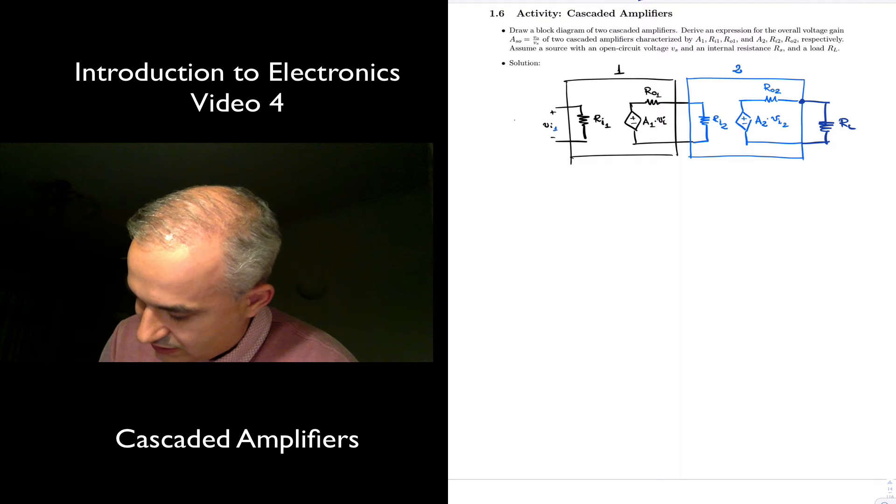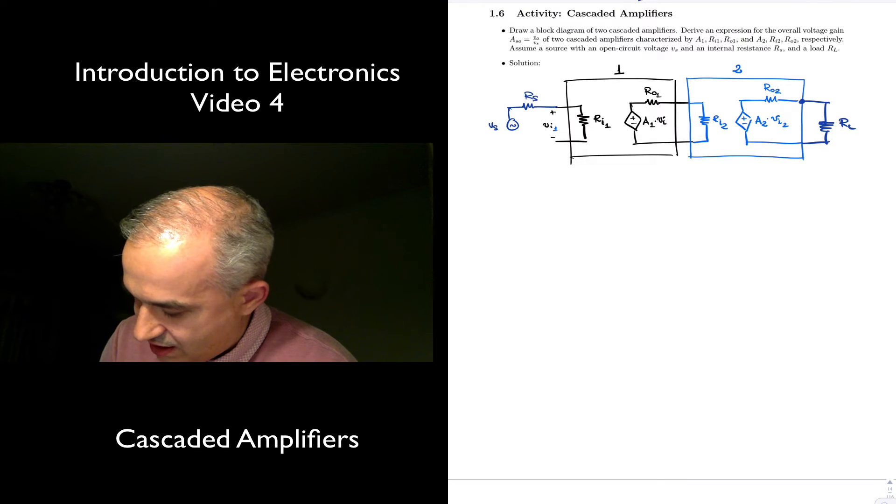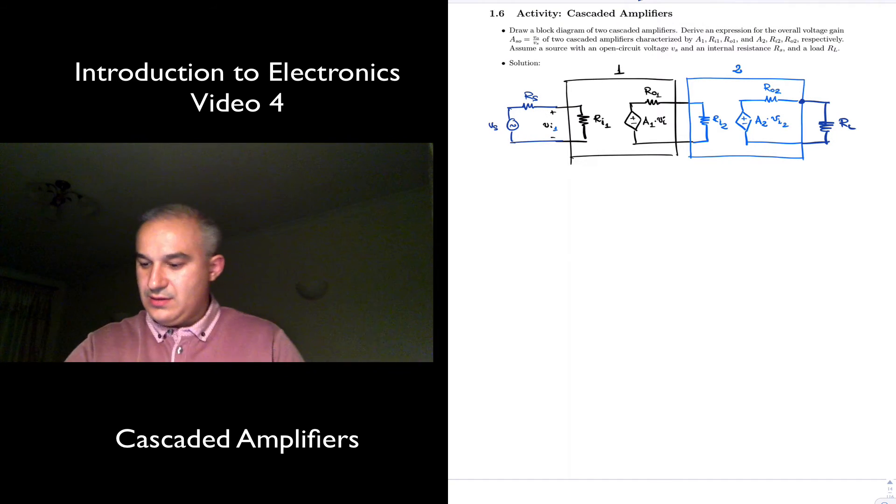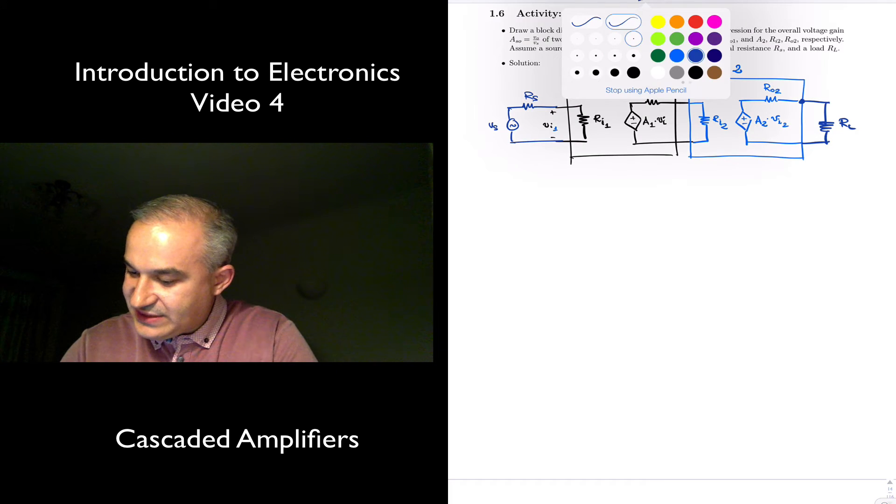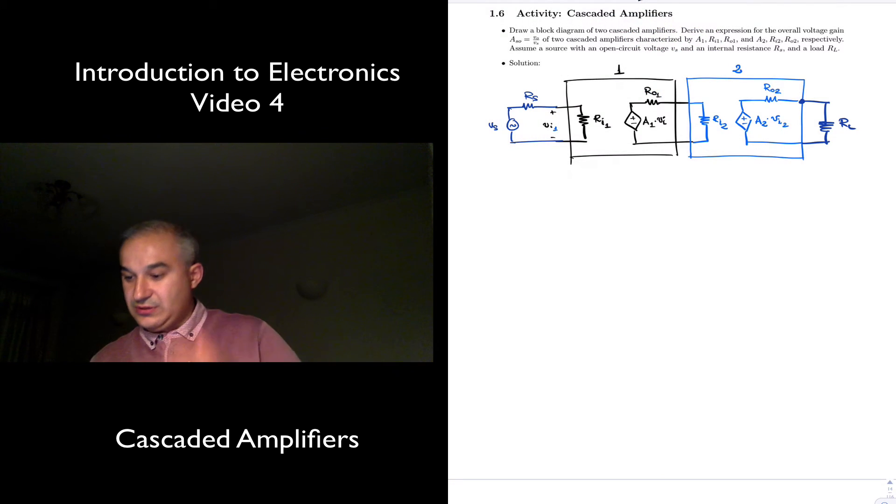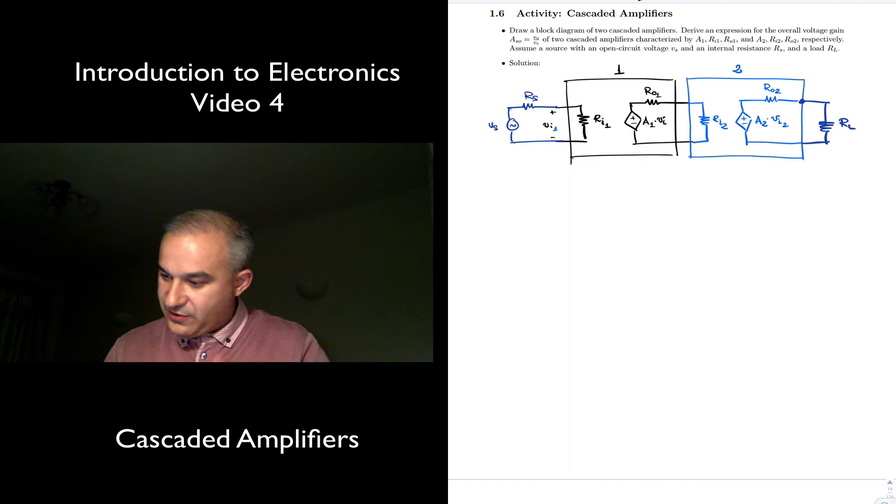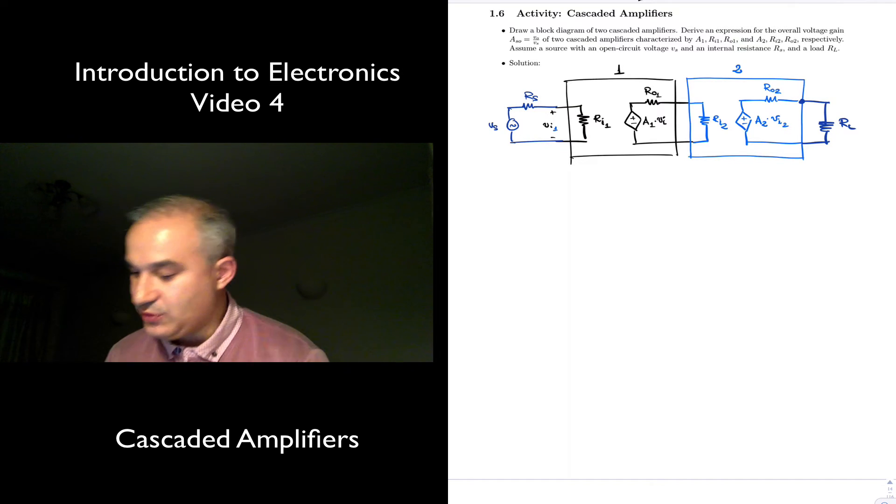And to a source Vs with an internal resistance Rs. The purpose of this activity is to derive an expression for the overall gain of the amplifier. Let's go ahead.